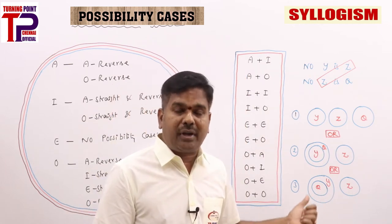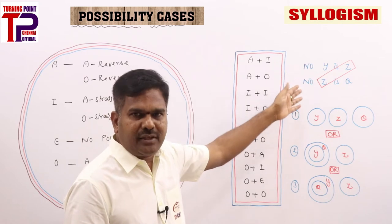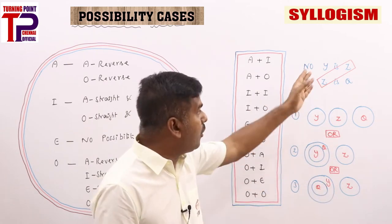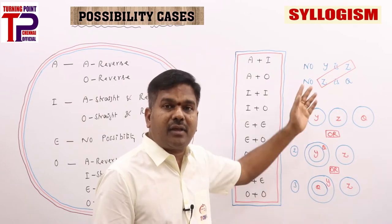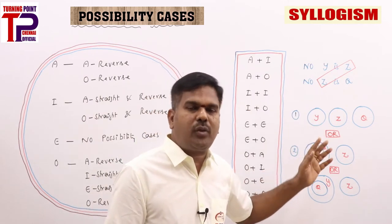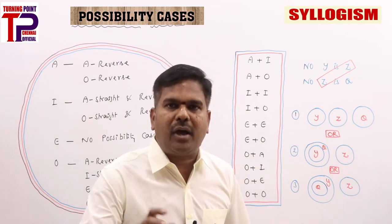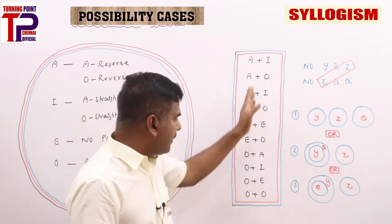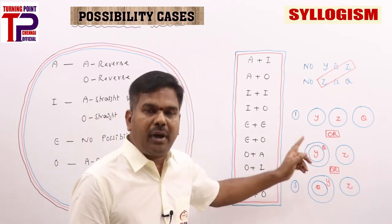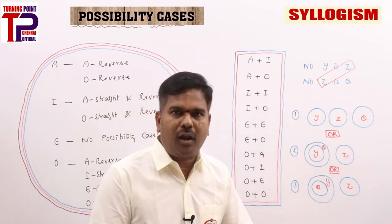Whenever E plus E is given, in conclusions — all Y is Q being a possibility, all Q is Y being a possibility, no Y is Q being a possibility, no Q is Y being a possibility, some Y is not Q being a possibility, some Q is not Y being a possibility, some Y is Q being a possibility, some Q is Y being a possibility — blindly put a tick mark. Whenever you see statement combinations that yield no conclusion based on six rules but mention possibility cases, all possibilities come into picture.